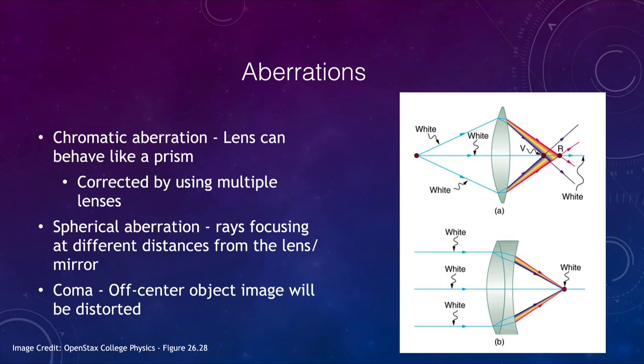There are some problems with telescopes, a couple different aberrations. One is chromatic aberration. When you have a lens it acts like a prism and splits light up into its component colors. The red light is bent a little bit less, the violet bent a little bit more, so the violet light focuses here and the red light focuses there, and everything does not come to the same focus. There are ways to minimize this if you use multiple lenses. However, the more lenses you have, the more light is absorbed.